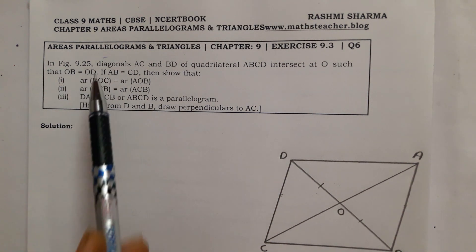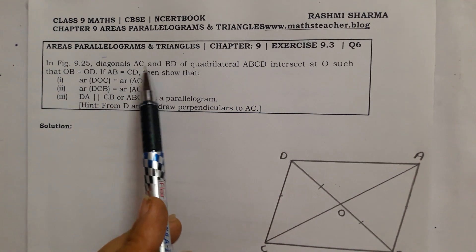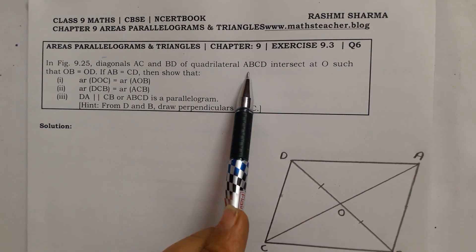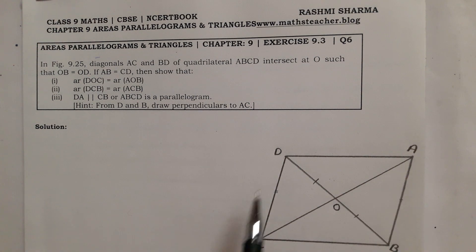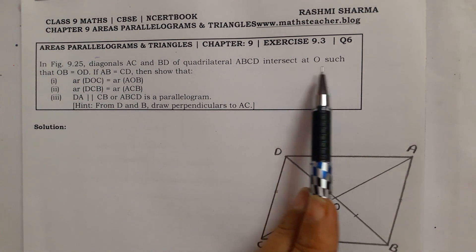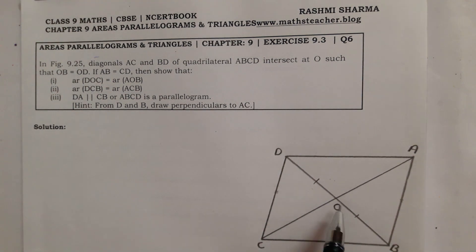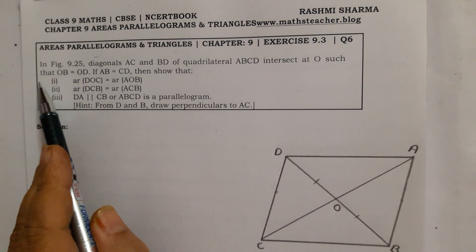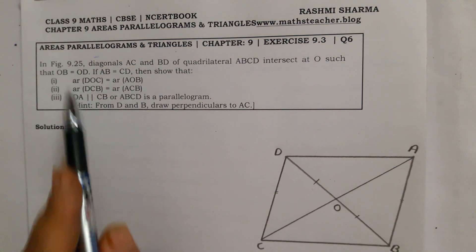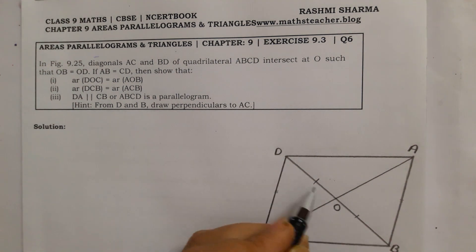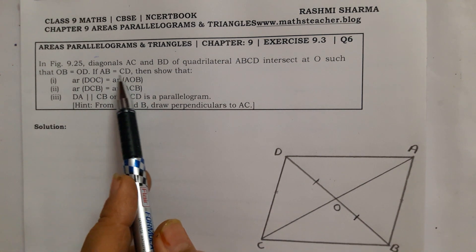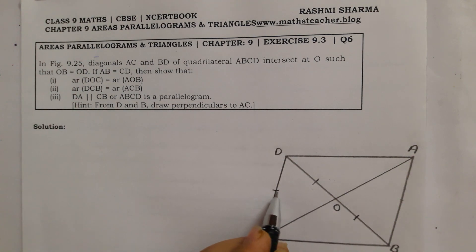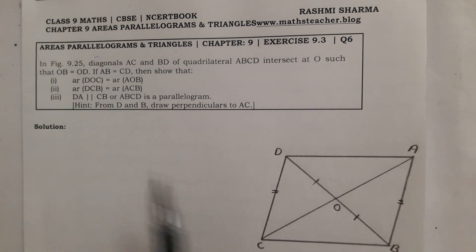In the figure, diagonals AC and BD of a quadrilateral ABCD are given. ABCD is a quadrilateral whose diagonals AC and BD intersect at point O, such that OB equals OD — so both sides are equal — and AB equals CD.